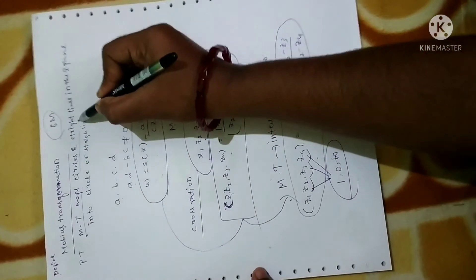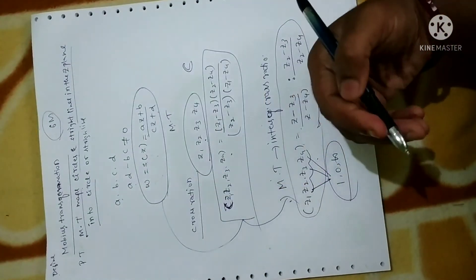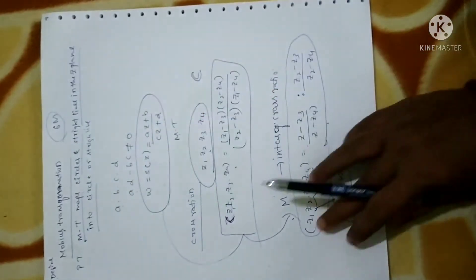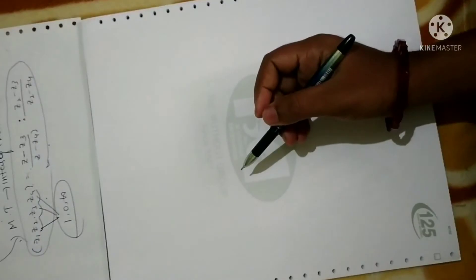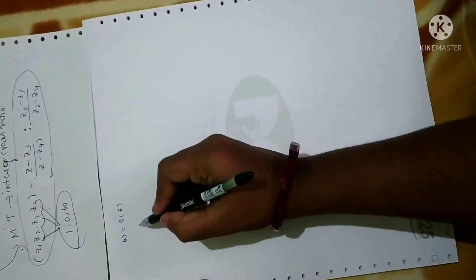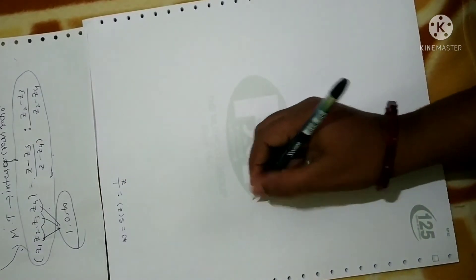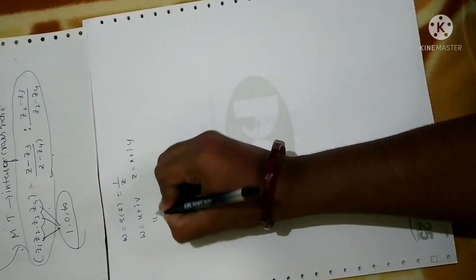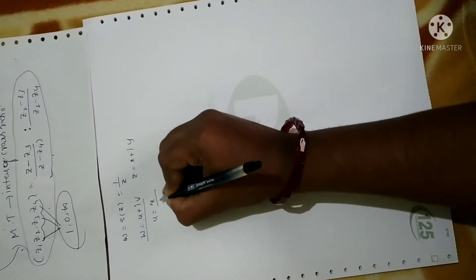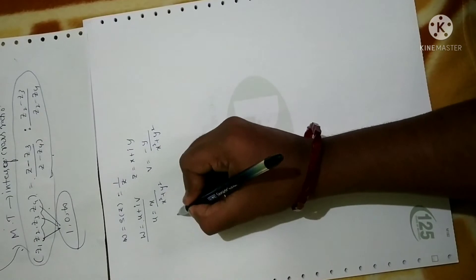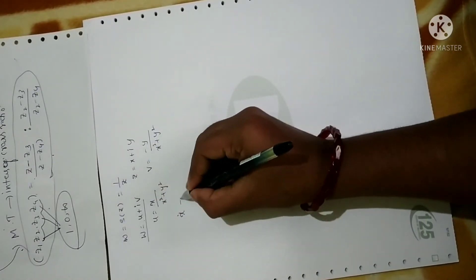Now we have to prove that this Möbius transformation maps circles and straight lines in the z-plane into circles and lines. To prove this, let us consider a Möbius mapping - also called Möbius transformation, represented by w or s(z). Let us consider a transformation as w = 1/z, where w = u + iv and z = x + iy. Then u can be defined as x/(x² + y²) and v is given by -y/(x² + y²). We can also write x = u/(u² + v²) and y = -v/(u² + v²).